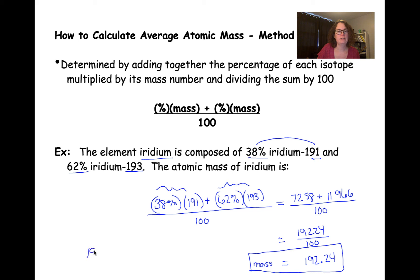the numbers that were given in terms of the individual isotopes. So our individual isotopes were 191 and 193, and our average isotopic mass is 192.24.